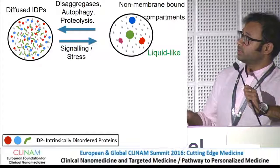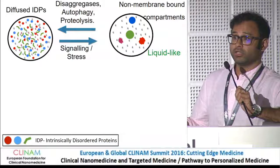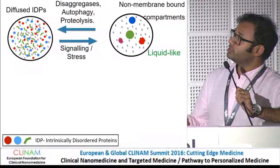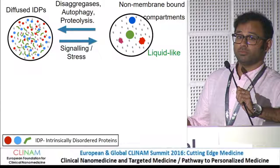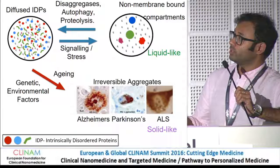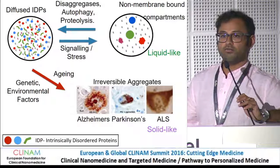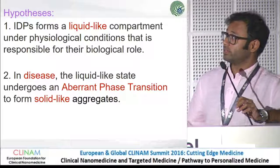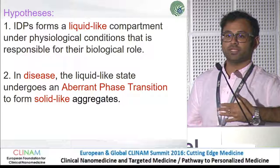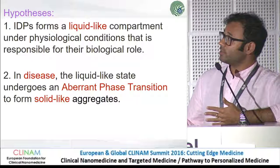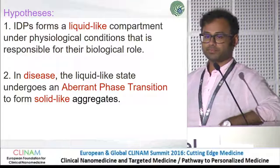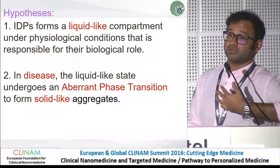So, coming back to the model: the diffused IDPs — intrinsically disordered proteins — can localize and form non-membrane-bound compartments which have been shown to have liquid-like properties. And these diffused IDPs have also been shown to form irreversible aggregates in disease. This forms the background of my study. The two hypotheses we came up with: first, could it be that IDPs actually form a liquid-like compartment under physiological conditions in a healthy cell? And second, in disease, does this liquid-like state undergo an aberrant phase transition to form solid-like aggregates?